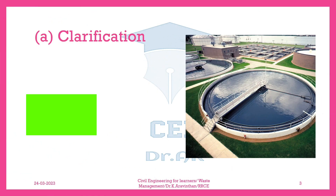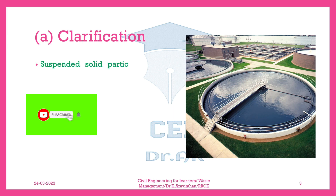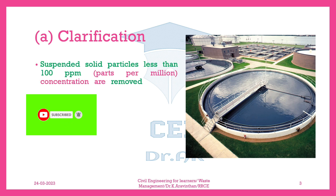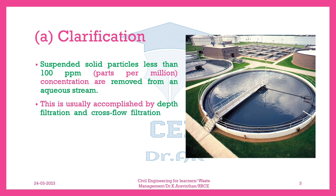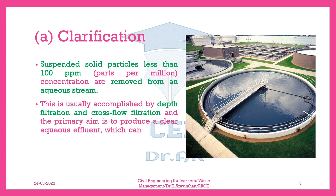I. Clarification. Suspended solid particles less than 100 ppm (parts per million) concentration are removed from an aqueous stream. This is usually accomplished by depth filtration and cross-flow filtration, and the primary aim is to produce a clear aqueous effluent, which can either be discharged directly or further processed.